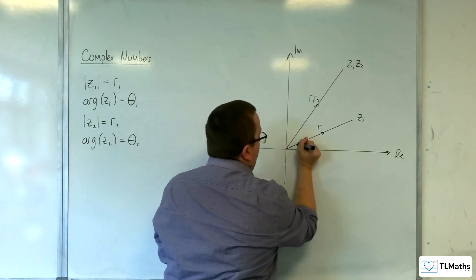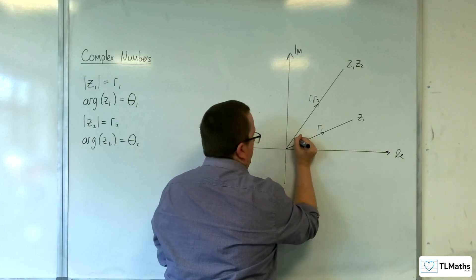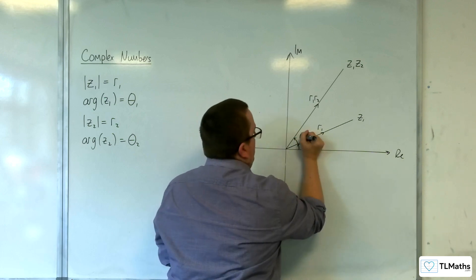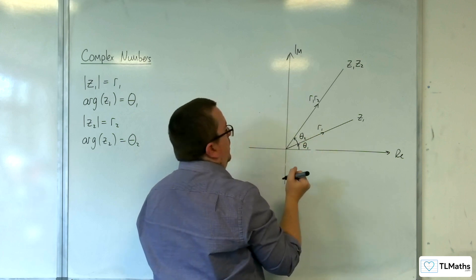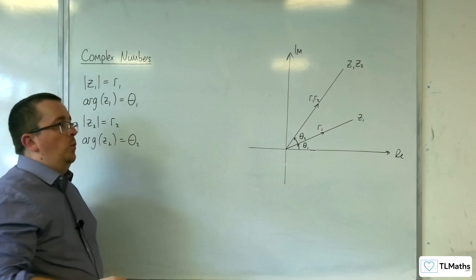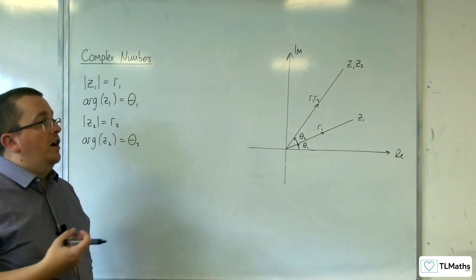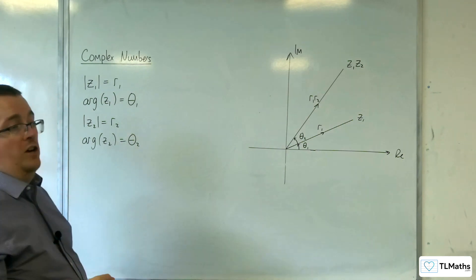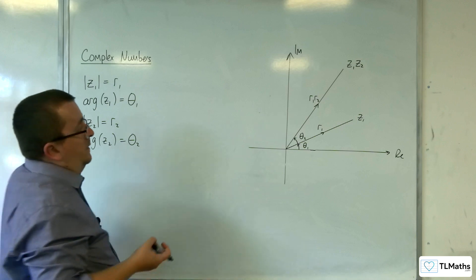And this angle here will be theta 2, so that the argument of Z1 Z2 is theta 1 plus theta 2, or the argument of Z1 plus the argument of Z2.